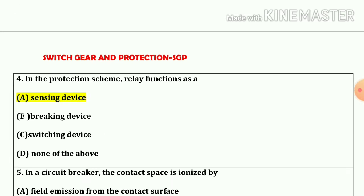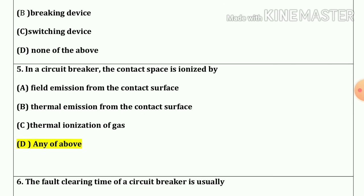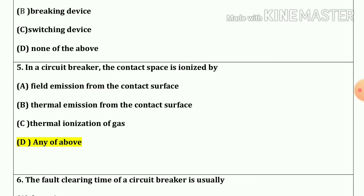Question number 4. In protection scheme relay functions as a sensing device. So our answer is option A. Question number 5. In a circuit breaker the contact space is ionized by any of above, that means A, B and C also.